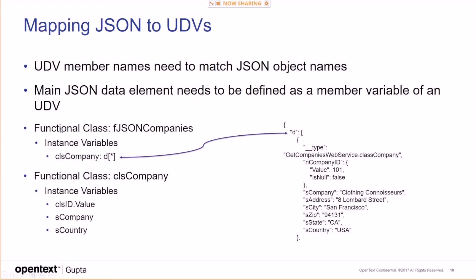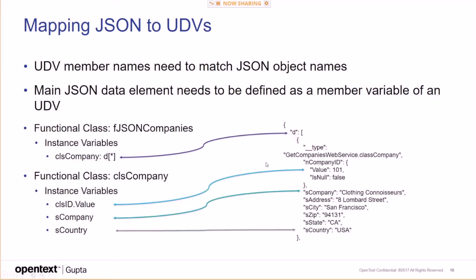You need to have an instance variable that has an array of the UDV, and the name of the UDV needs to match the name in the JSON. If that doesn't match, it doesn't work. The names of the UDV members also need to match — for example, value, s-company, and s-country must match exactly.